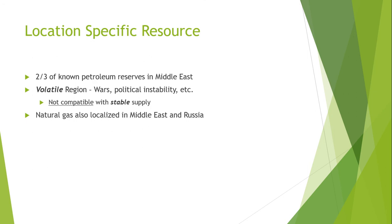Let's discuss the first point: location-specific resources. Fossil fuels are found underground in reservoirs trapped in deposits surrounded by layers of rock. Coal beds, for example, lie under 200 to 300 feet below the surface. Similarly, oil and natural gas deposits are typically a mile or two down, and the deepest oil and gas wells have reached more than six miles beneath the surface of the earth.